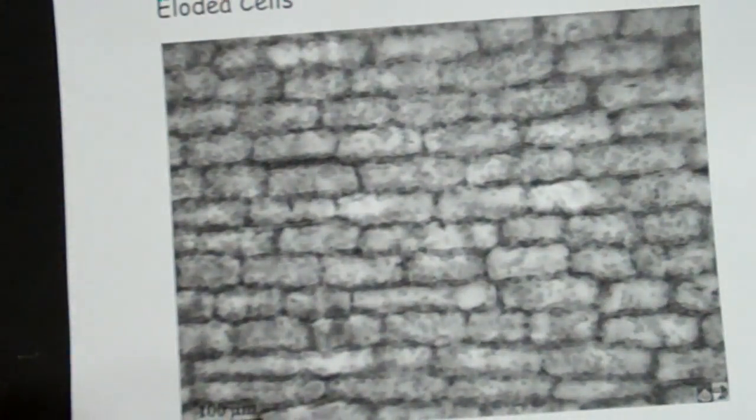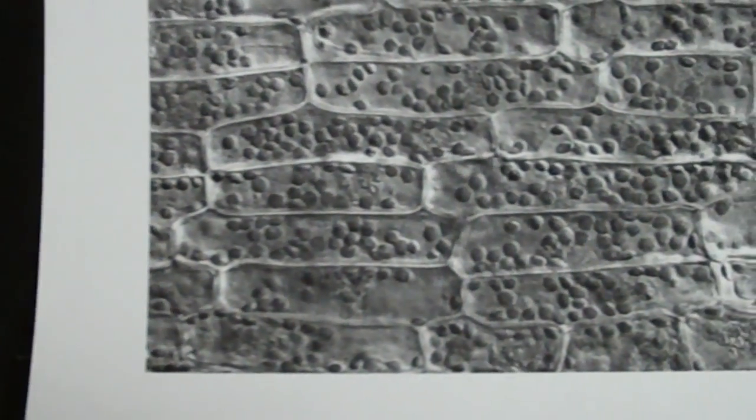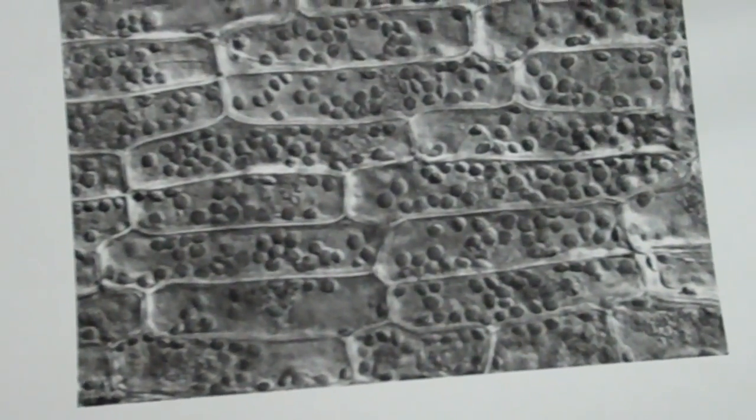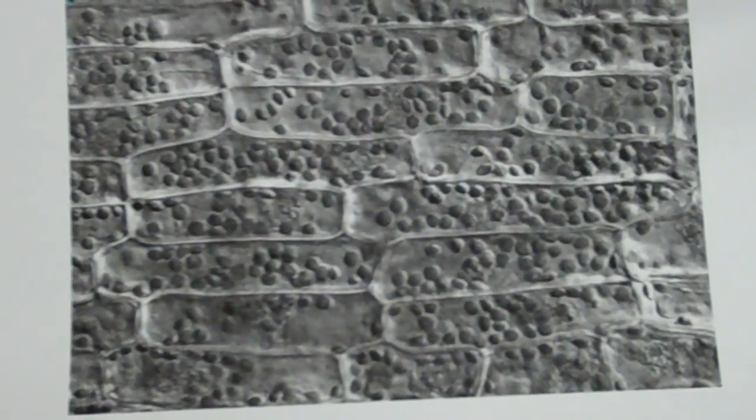This is what you might see at first. And then if you get a little bit closer, hopefully you're going to be able to see some individual dots. Now those dots on my black and white picture are going to be green under the microscope.